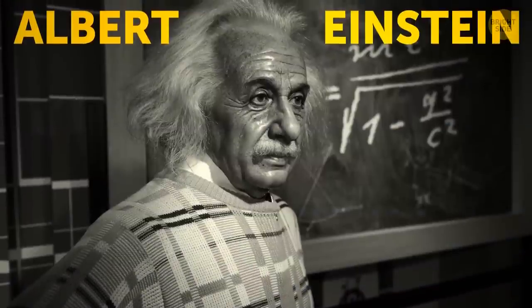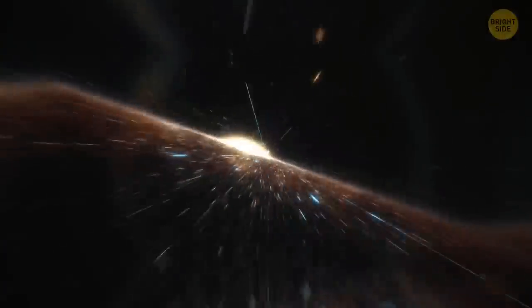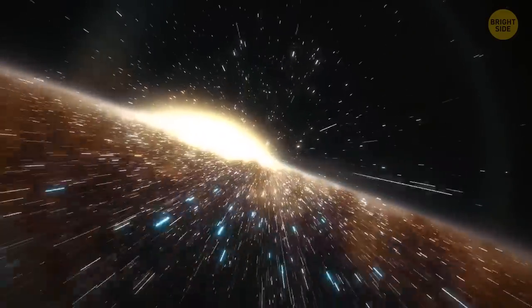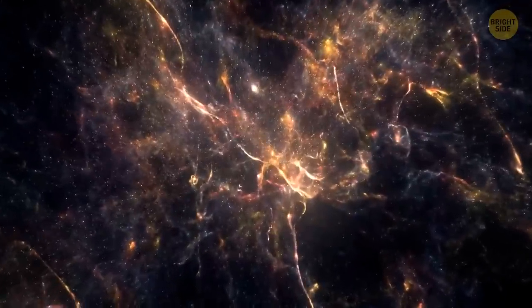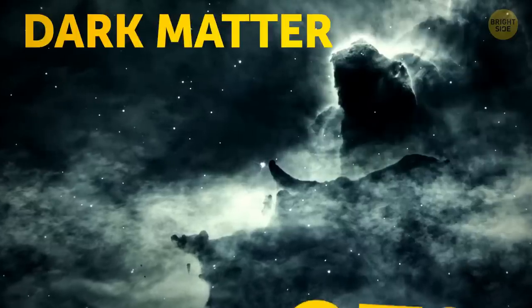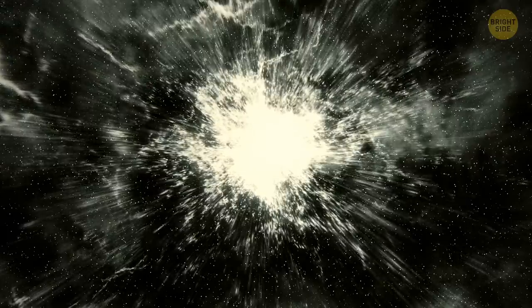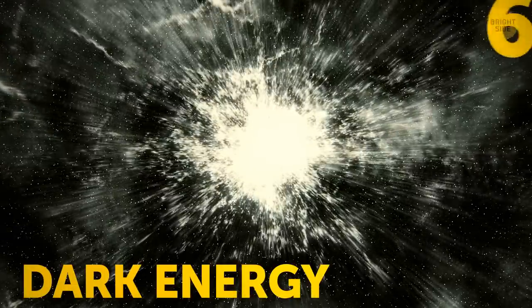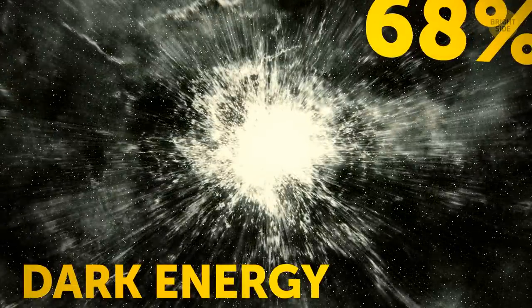Humans explore the universe all the time, but we can only see around 5% of the matter up there. And Albert Einstein was the first one that realized the empty space is not really nothing. The rest we can't see is actually made up of invisible matter, also known as dark matter. It's about 27%. Combined with something called dark energy, which is 68%.